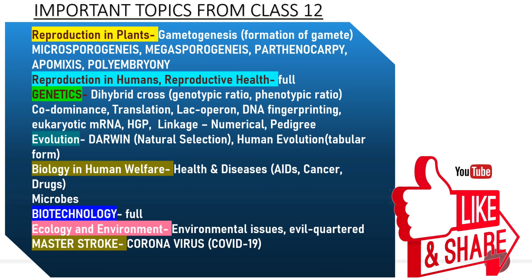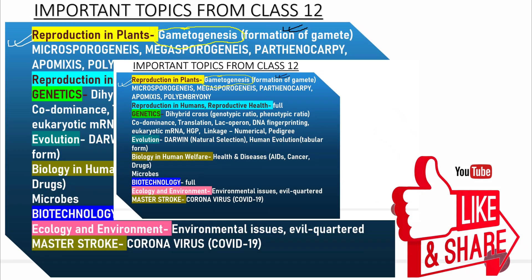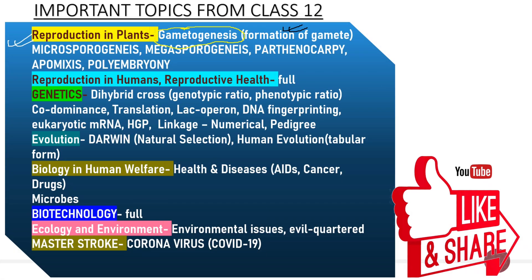Now we will learn about the important topics from Class 12. The important topics include Reproduction in Plants. In this topic we have to study gametogenesis, which is really very important — that is, the formation of the gamete. In gametogenesis, we have to learn about microsporogenesis, megasporogenesis, Parthenocarpy, Apomixis, and Polyembryony.